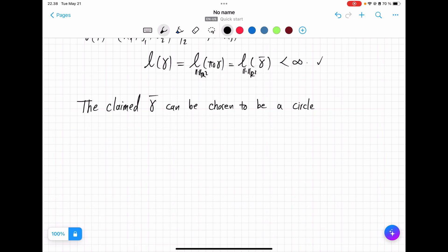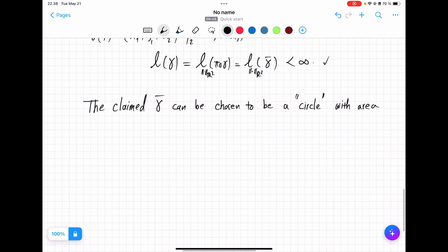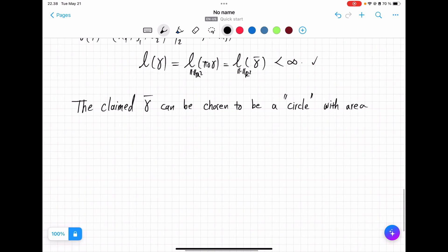gamma bar can be chosen to be a circle, so a curve is not a set so circle here would mean a parameterization of a circle with area equal to